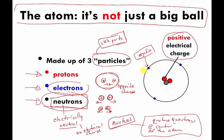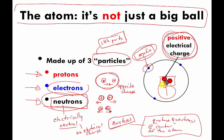There's a lot of information here. Protons and neutrons are about the same size, electrons are smaller. There's this thing called electrical charge: protons have a positive electrical charge, electrons have a negative electrical charge, and neutrons are electrically neutral, which means they have no electrical charge.